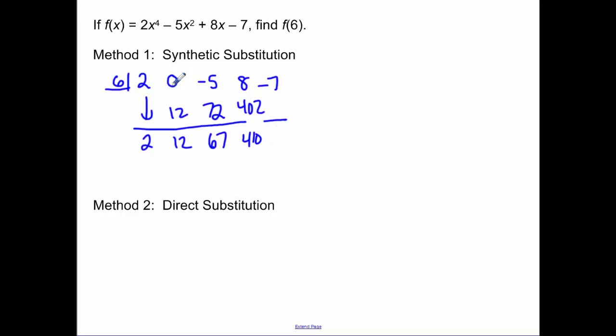Then I multiply 410 by 6 to get 2,460. I add to get 2,453. So f of 6 is equal to 2,453. So that means that 6 is not a factor.